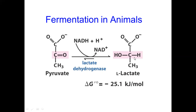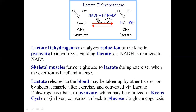Lactate dehydrogenase catalyzes the removal of hydrogen from lactate, because this is a reversible reaction. Lactate, as a substrate, is converted back: lactate dehydrogenase removes hydrogen from lactate to form pyruvate. Lactate dehydrogenase catalyzes the reduction of the keto group of pyruvate to a hydroxyl group, yielding lactate, as NADH is oxidized to NAD⁺.